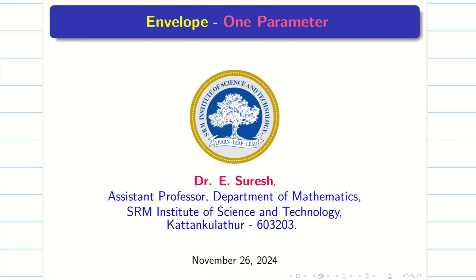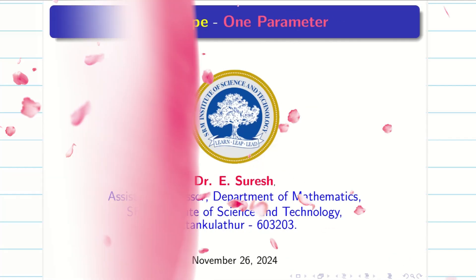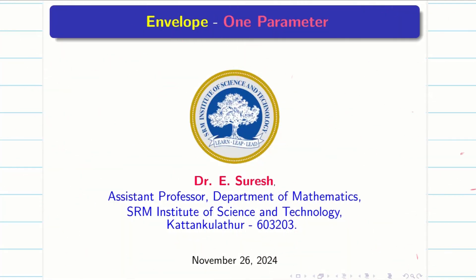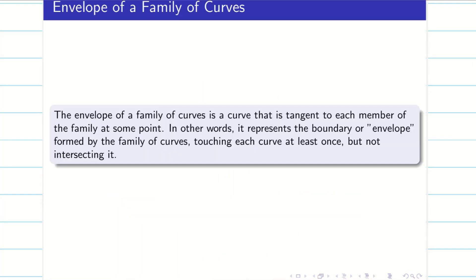Dear students, welcome to the problem solving session on envelope of one parameter. The envelope of a family of curves is a curve that is tangent to each member of the family at some point. In other words, it represents the boundary or envelope formed by the family of curves, touching each curve at least once but not intersecting it.